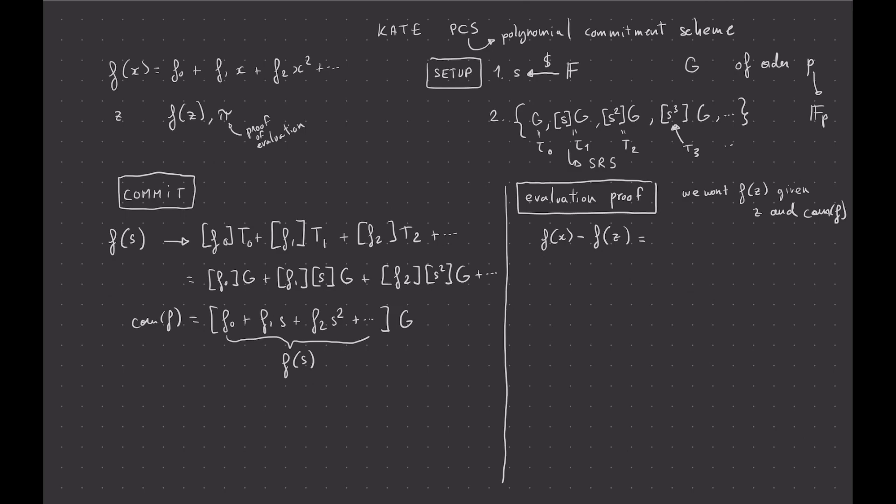If you put z, you get f(z) minus f(z). It's obviously 0. So z is a root. That means, as we've seen in a previous video, that you can write it as (x minus z), because z is a root, times some polynomial h(x) that we don't know or that we can easily calculate, I guess. Or at least a prover can calculate that by dividing this part with this part. But the verifier cannot calculate because they don't know f(x). They don't know f.